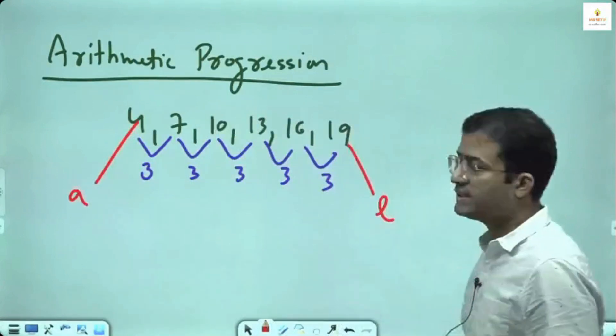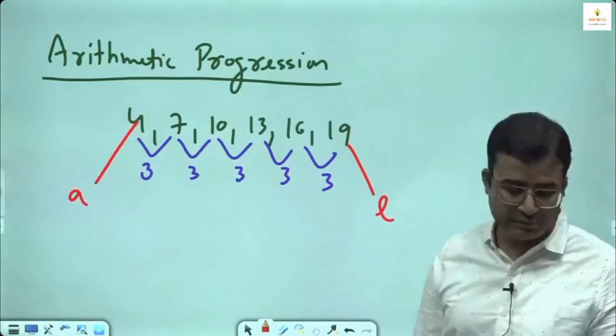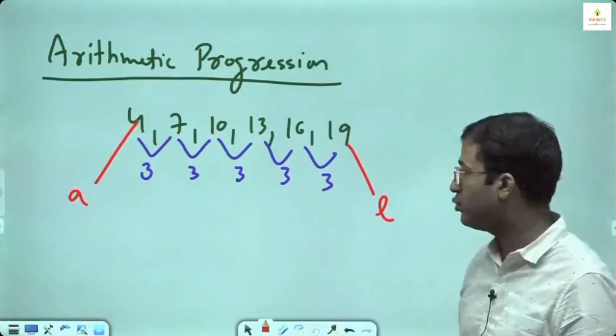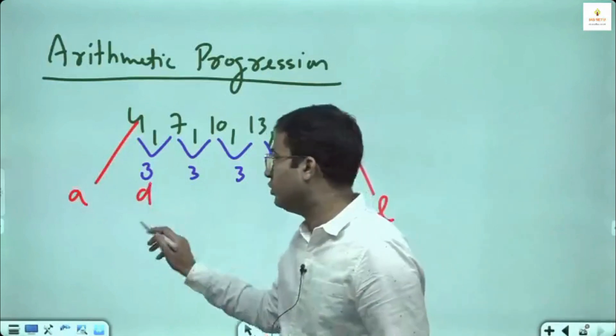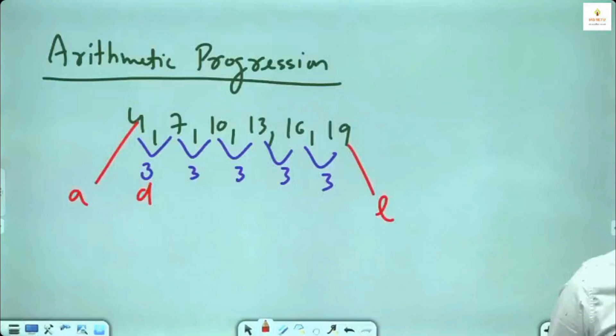The first term is denoted as a, last term is denoted as l. Common difference we call d. I will not discuss AP today in detail. I just tell you there is an observation on arithmetic progression.